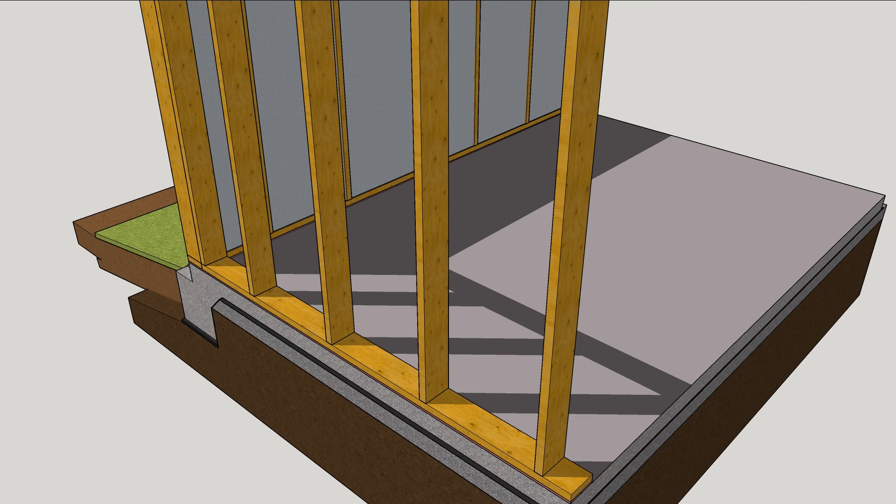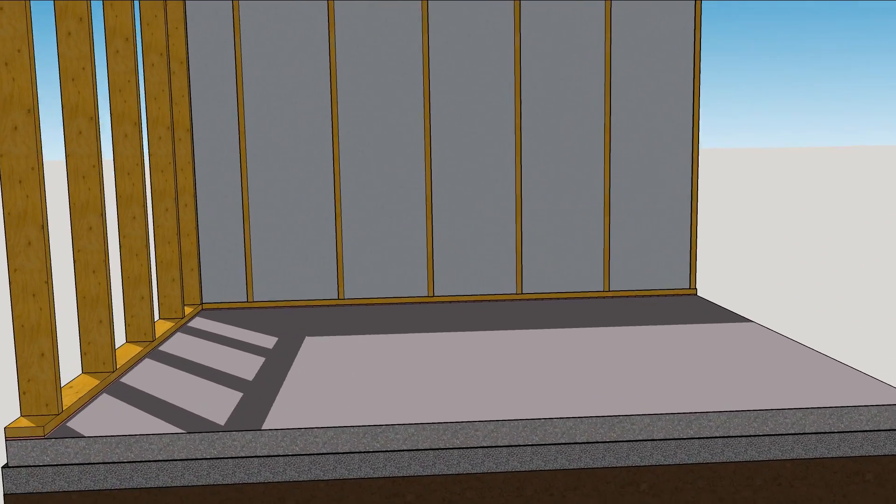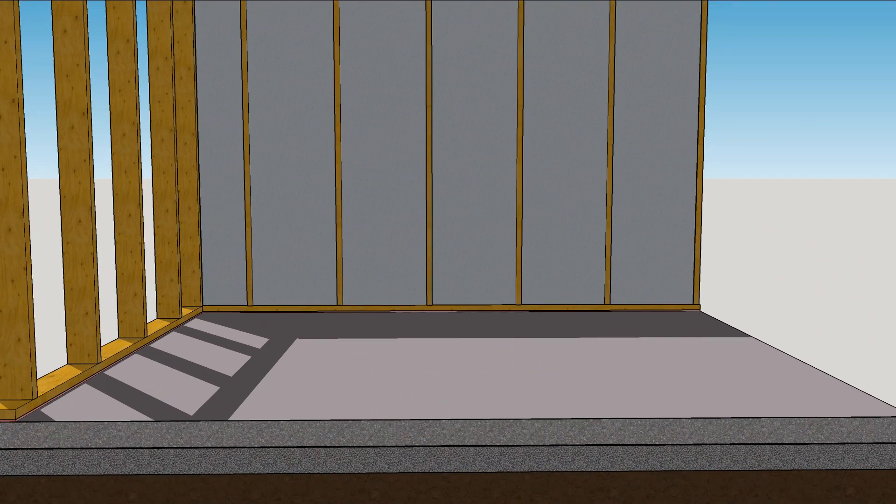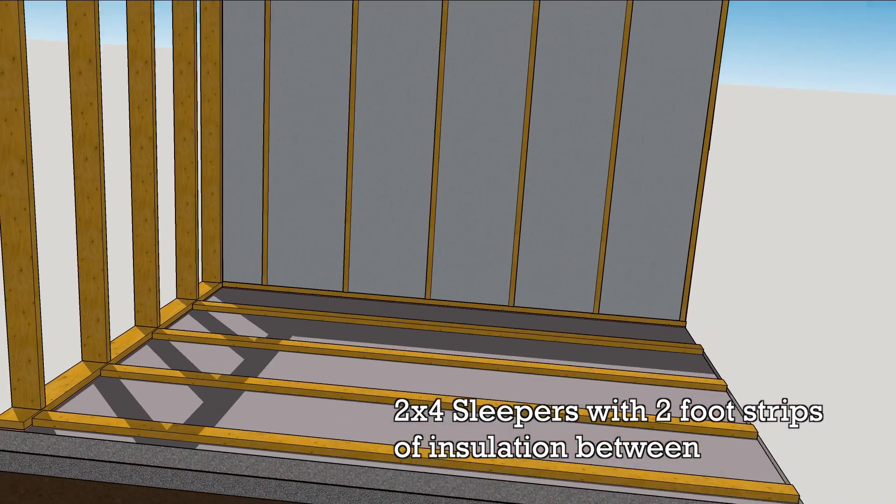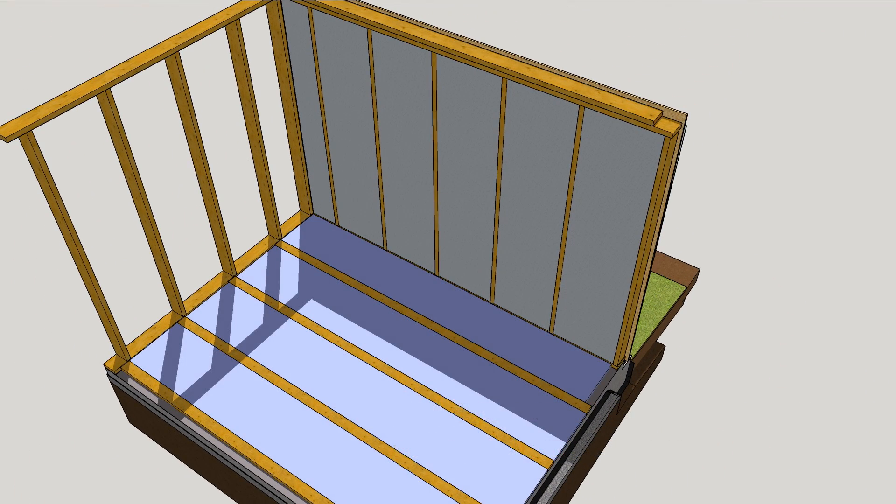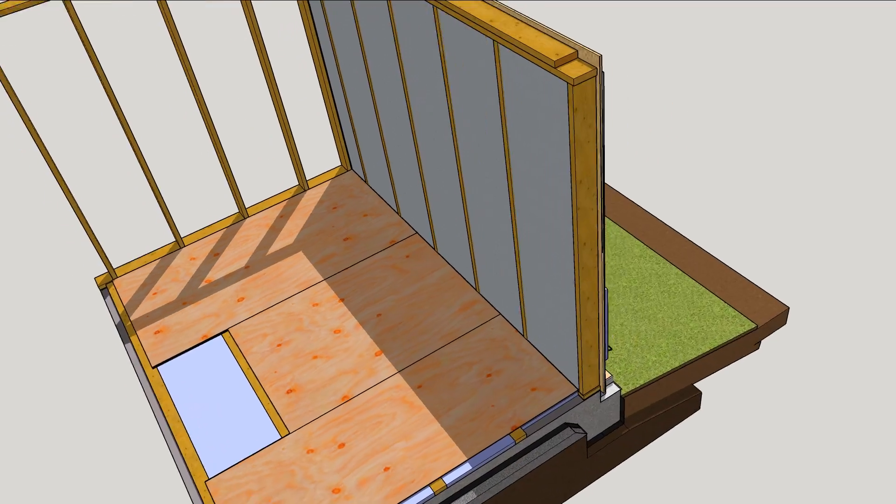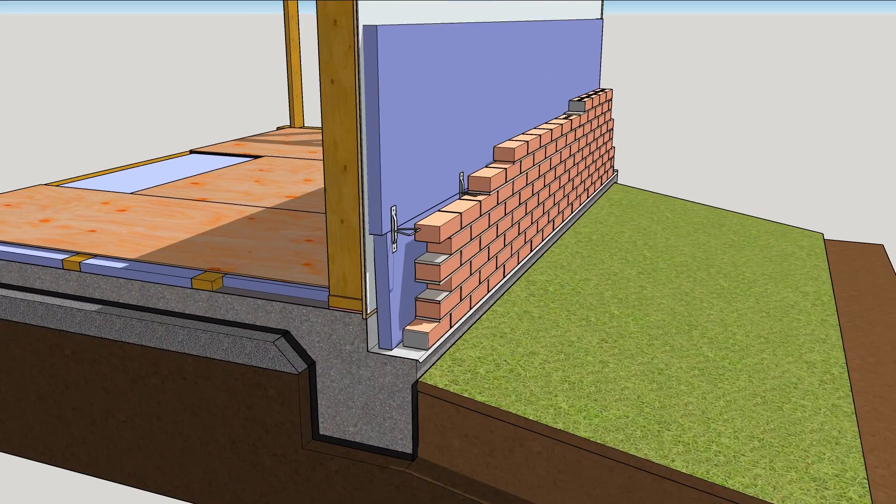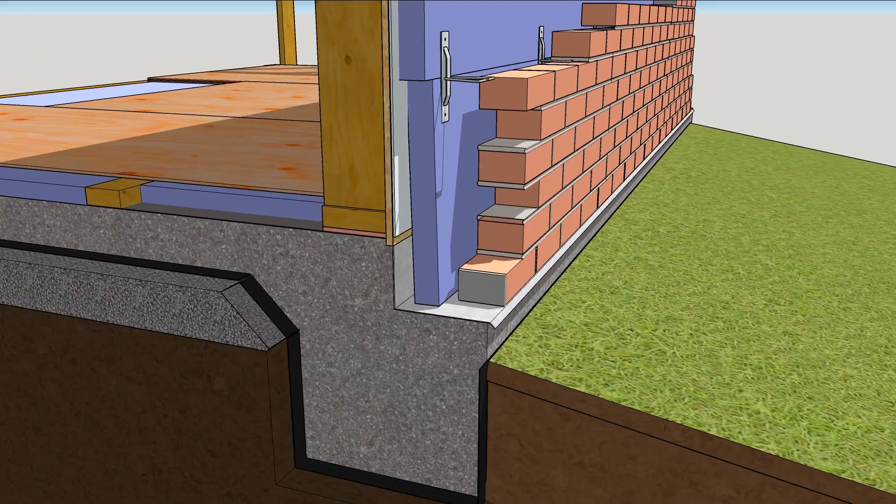With the water management system in place, turn to slowing the heat flow. Lay sleepers on the slab every 24 inches with strips of rigid insulation between them. Cover it all up with subfloor panels and you're on your way to a slab assembly that ain't scared of the weather.